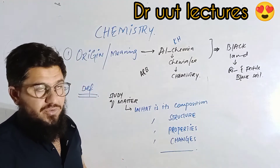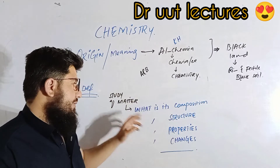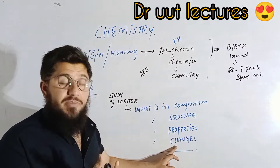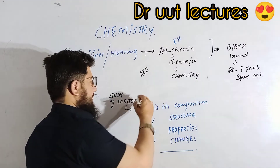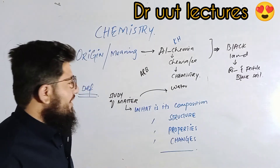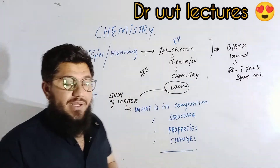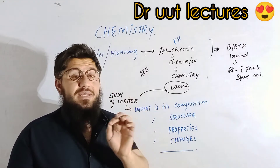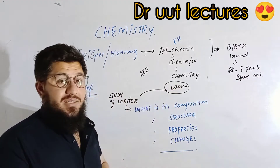Now let's come to the second point: the definition of chemistry. Very simply, chemistry is actually the study of matter. This matter is studied with respect to the following points: we study the composition of matter — what the matter is composed of; the structure of the matter; the properties of the matter; and the changes in the matter — how matter is changing. To understand this definition, let's use an example — water.